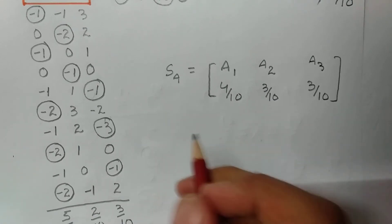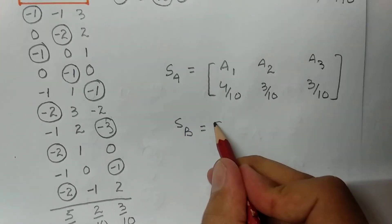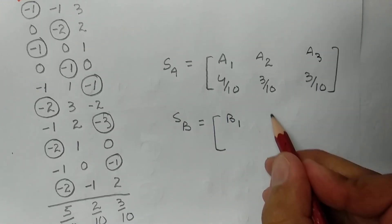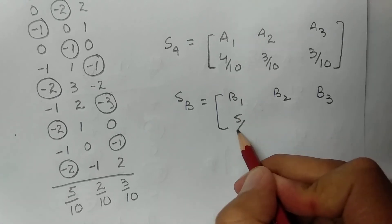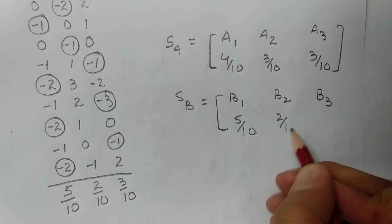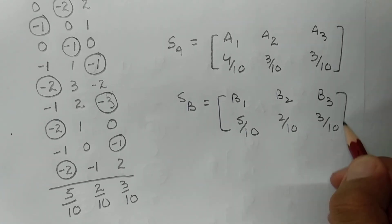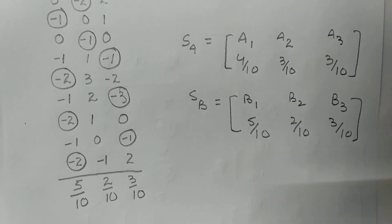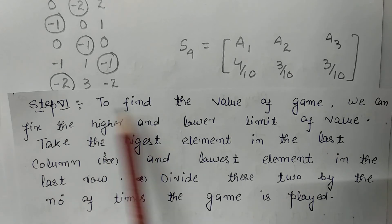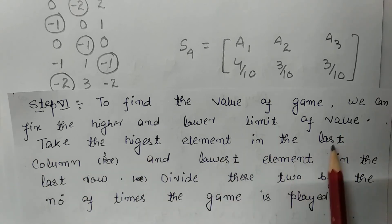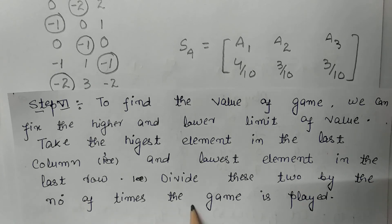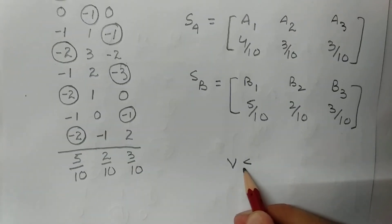The approximate optimal strategies for Player B are: B1 = 5/10, B2 = 2/10, B3 = 3/10. Now the last step: to find the approximate value of the game, we fix the higher and lower limits. Take the highest element in the last column and the lowest element in the last row, and divide each by the number of times the game is played (number of iterations).